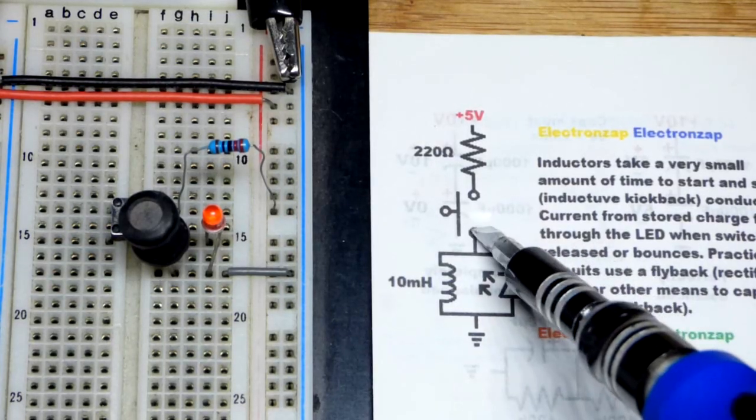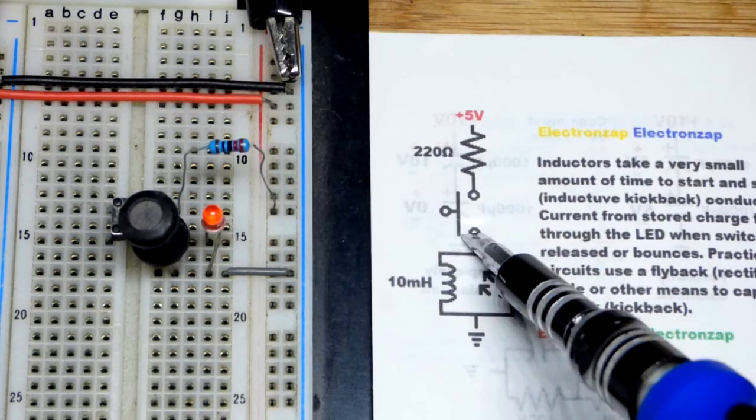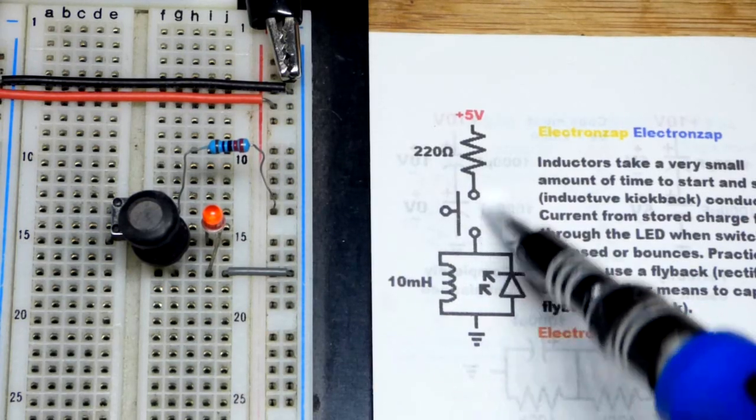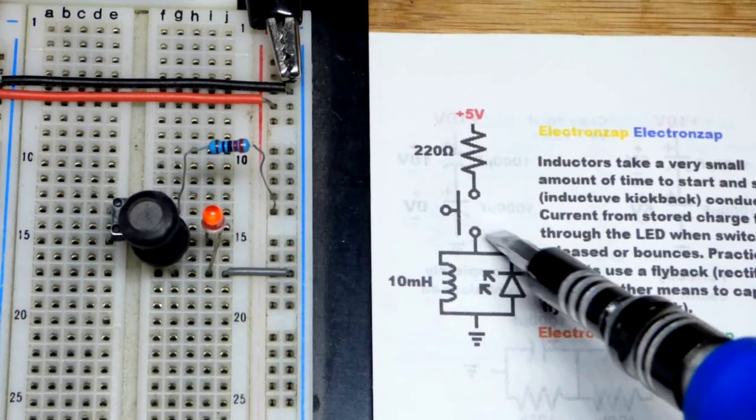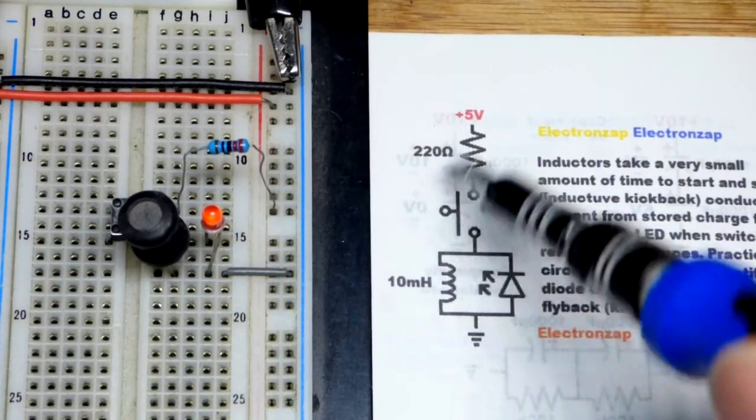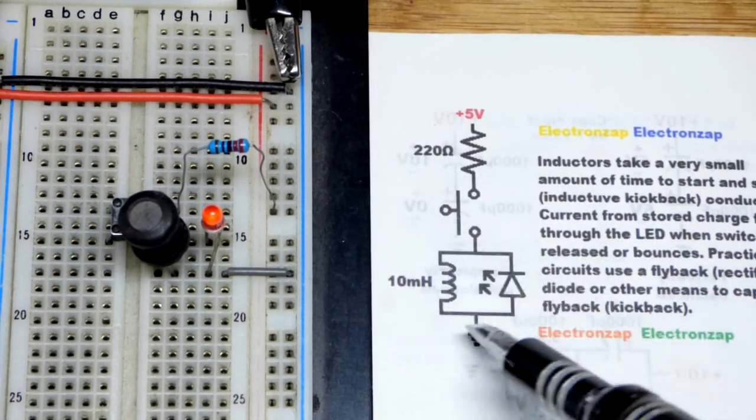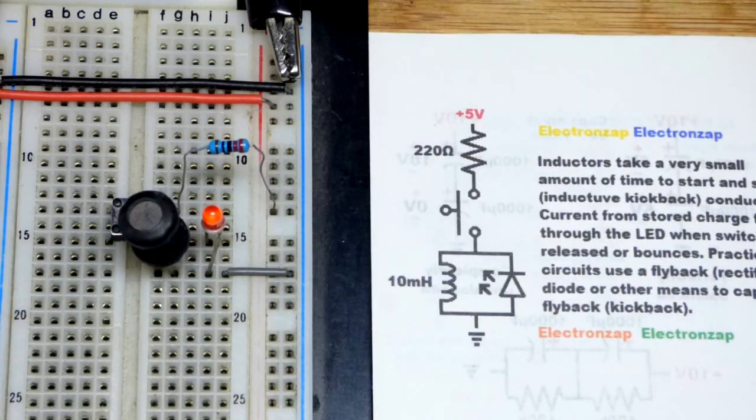So without the diode there, you might see a spark. If it's a large inductor, you'll definitely see a spark with the switch contacts without a diode. So it's going to keep that current flowing, it builds up a voltage in order to do so. Then you'll see that spark.